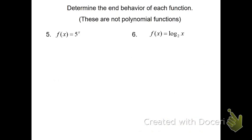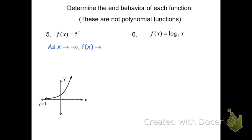Now I've got two more problems — these are not polynomial functions, but we can still talk about their end behavior. The first is an exponential function. We can't look at the degree because they don't have one; instead, we need to think about what their graph looks like. An exponential function with a base greater than 1 is increasing. As x approaches negative infinity — moving left — the graph flattens out approaching an asymptote at 0; it cannot cross or hit it. So as x goes to negative infinity, f is approaching 0. On the right side, as x approaches positive infinity, the graph is unbounded going up, so f is going towards infinity.